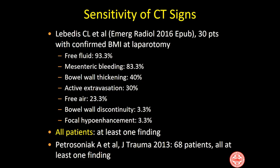Regarding sensitivity of CT signs: free fluid has 93% sensitivity, mesenteric bleeding 83%, wall thickening about 40%, free air about 25%, and discontinuity and hypoenhancement are seen very uncommonly — based on one paper with 30 confirmed patients with bowel and mesenteric injury at laparotomy. All patients had at least one finding, and in another 2013 paper in the Journal of Trauma with 68 patients with proven bowel injuries, again all patients had at least one finding. This underscores the lack of need for oral contrast in blunt trauma patients.